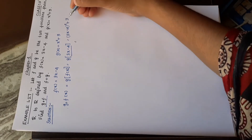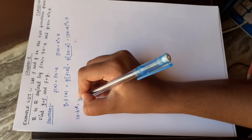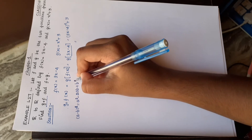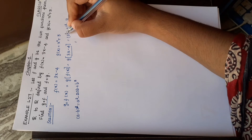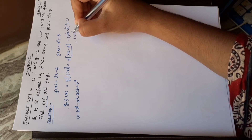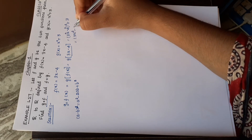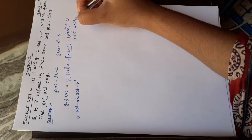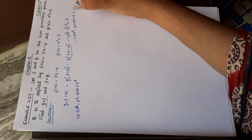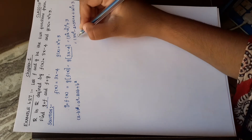Using the identity a² - 2ab + b², where a = 3x and b = 4: a² = (3x)², 2ab = 2 × 3x × 4, and b² = 4² = 16. So g(f(x)) = (3x - 4)² + 3 = 9x² - 24x + 16 + 3.